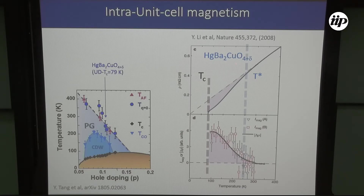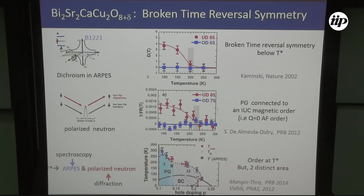In the meantime, on the same sample you can measure the resistivity and see the change in resistivity exactly at T*, associated with the pseudogap state.